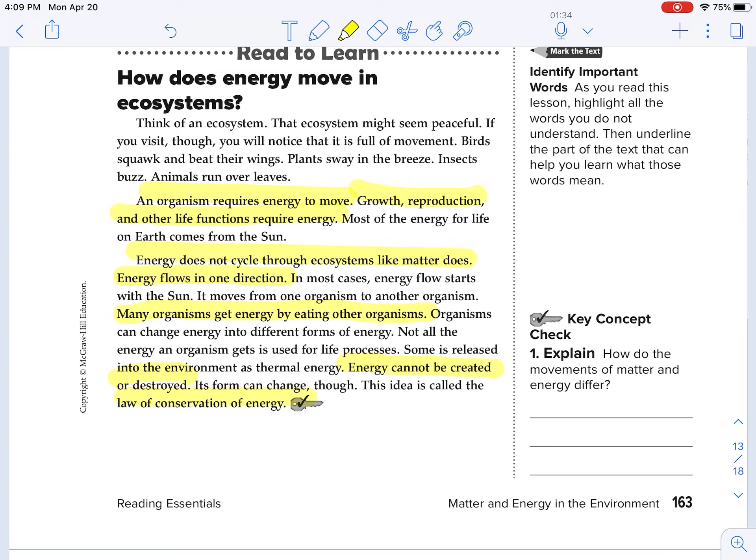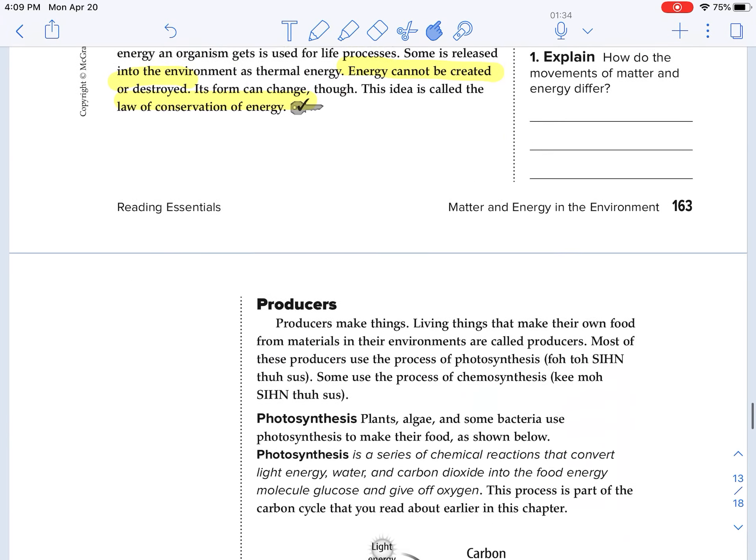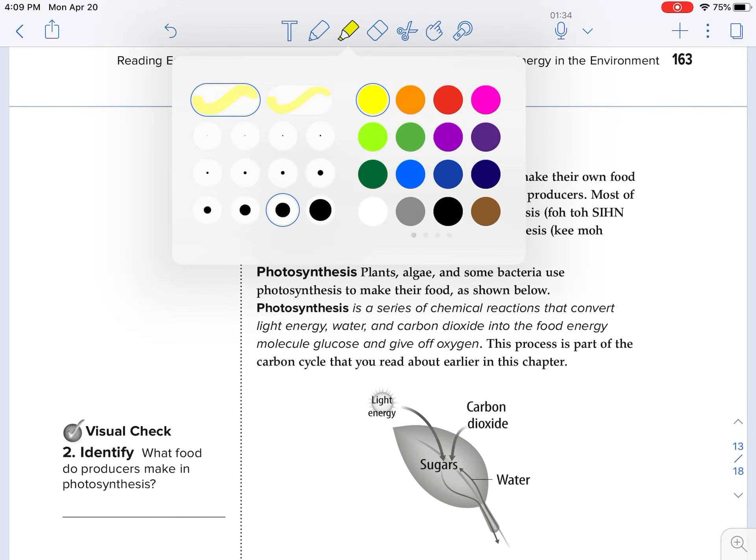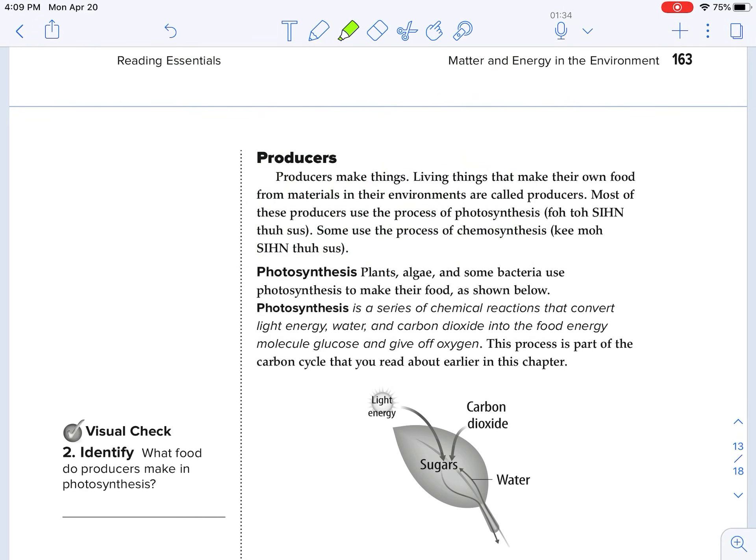We've had that talk in the fall when we had our energy unit. Let's go ahead and change this. Okay, producers make things. Living things that make their own food from materials in the environment are called producers. Most of these producers use the process of photosynthesis. Some use the process of chemosynthesis.